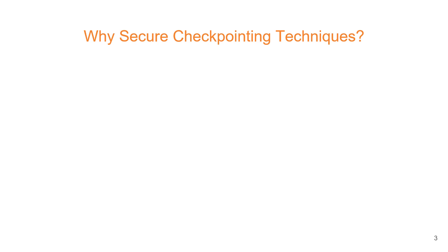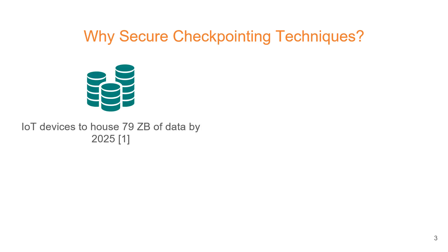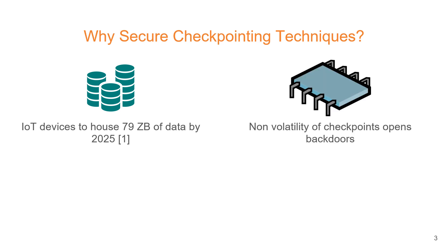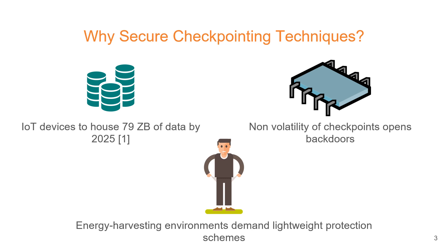Why do we care about security in checkpointing techniques? By 2025, Internet of Things devices are going to generate 79 zettabytes of data. This data finds its use in all walks of life, making security of IoT devices critical. The non-volatile nature of checkpoints in intermittent computation makes these devices vulnerable to unusual security threats. Additionally, researchers must also take account of resource-constrained environments in which energy harvesting devices operate while designing their defenses. All these challenges make the problem of secure checkpointing unique and interesting.